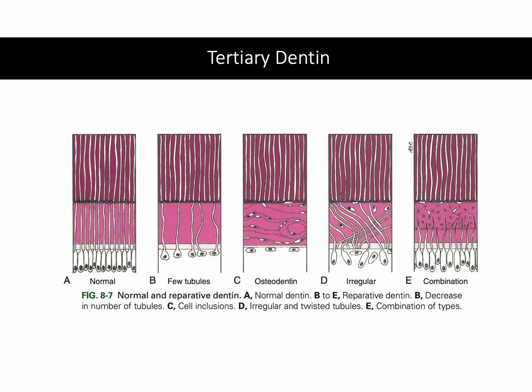Tertiary dentine is the dentine deposited in the tooth because of a stimulus — a stimulus like trauma or caries. Many stimuli cause dentine to respond in different ways, depending on the type of pathogen, the kind of stimulus, and how fast it happened. Slow caries makes different dentine than fast caries. That is why tertiary dentine has many names: reparative dentine, irregular dentine, osteodentine — according to how the odontoblasts or the pulp reacted to the stimulus.